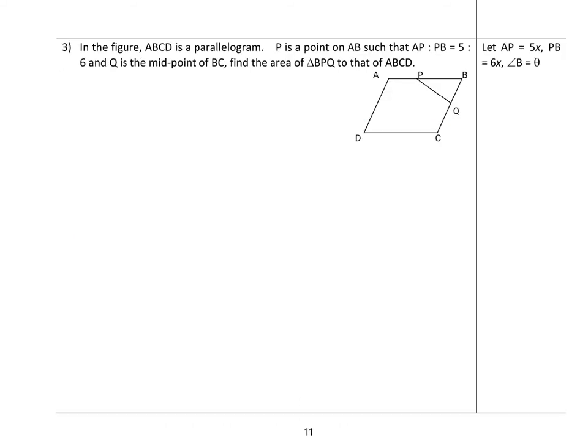Question 3: In the figure, ABCD is a parallelogram. P is a point on AB such that AP to PB would be 5 to 6. I can quickly count - here is 5x, here is 6x. Q is midpoint of BC. This is the point. Area of ABCD - just asking you this part and this part is how much.